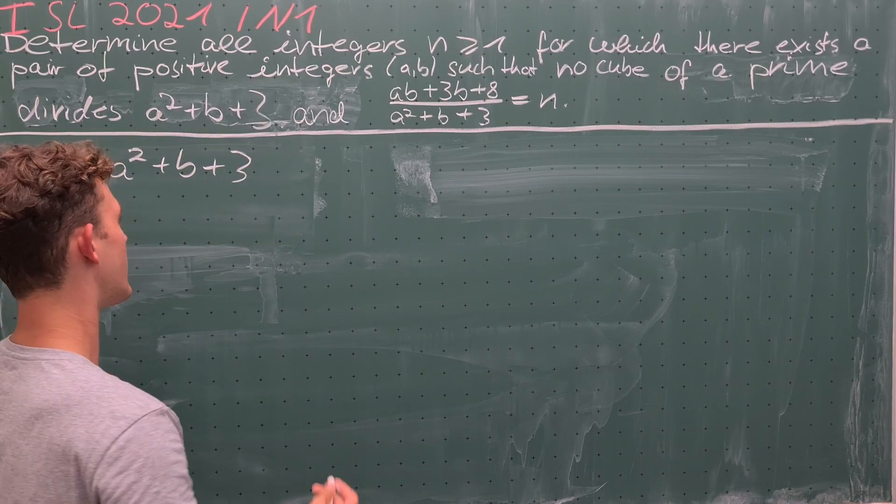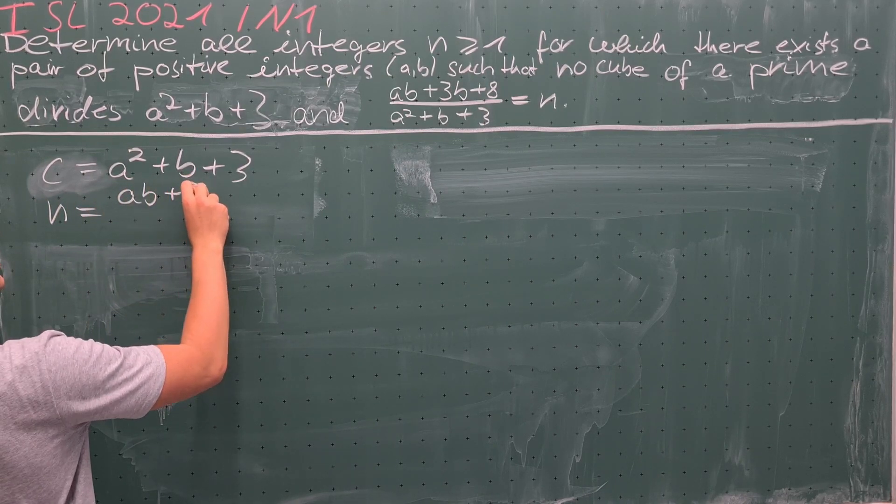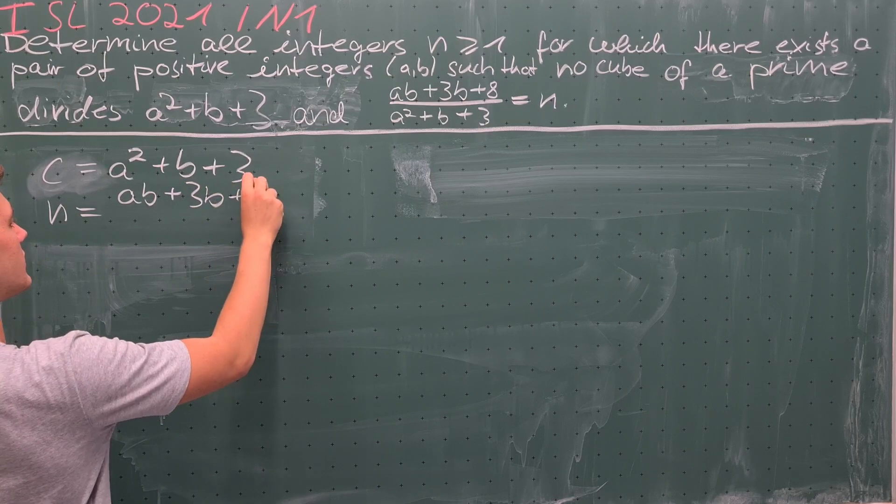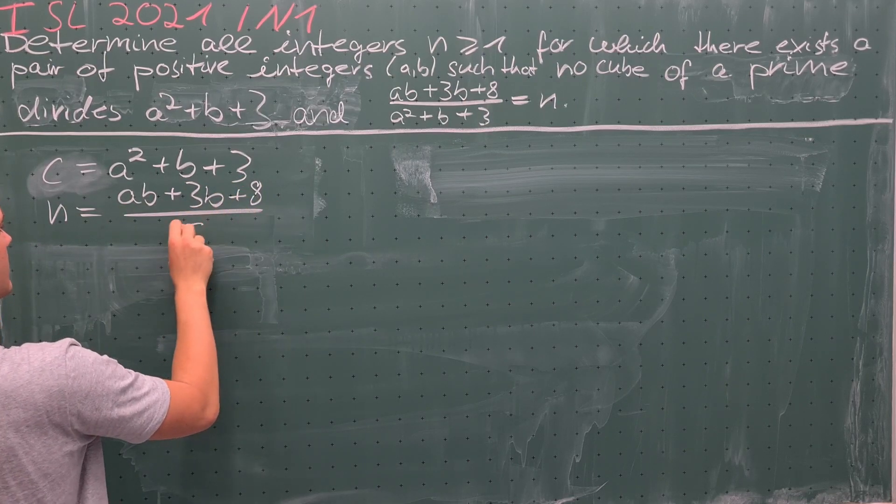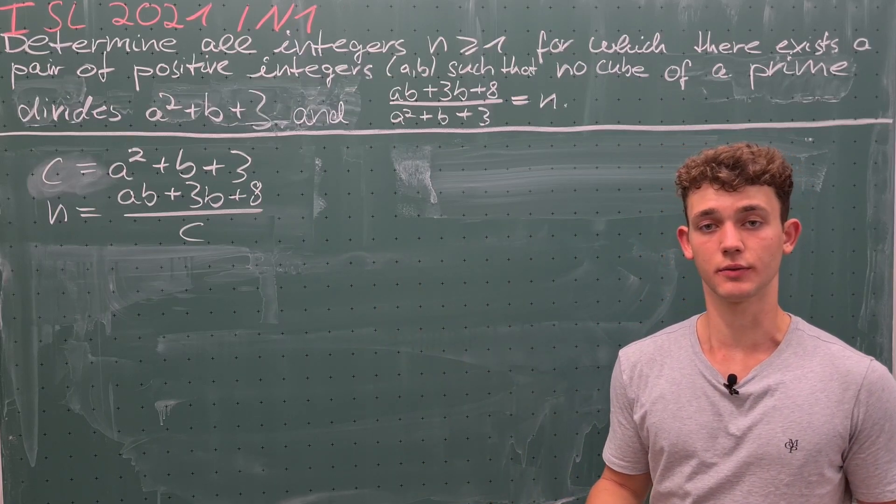Our expression for n now becomes n = (ab + 3b + 8)/c. We have now introduced a third variable into our equation, although we only have two degrees of freedom.